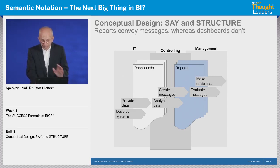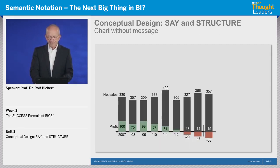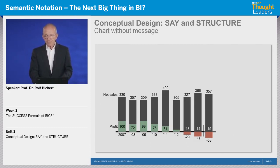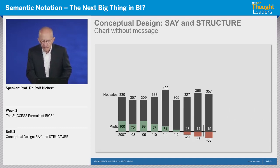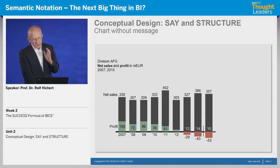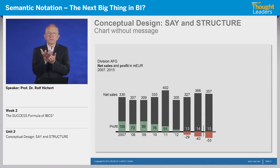We have three levels of these messages. I would like to explain with a little example. You see this column chart showing net sales and profit from 2007 to 2015. 2015 is the last year with a negative profit — a loss of 53 million. The first level is a simple statement, a detection. For example, we have an export drop of 25%. That's a detection.